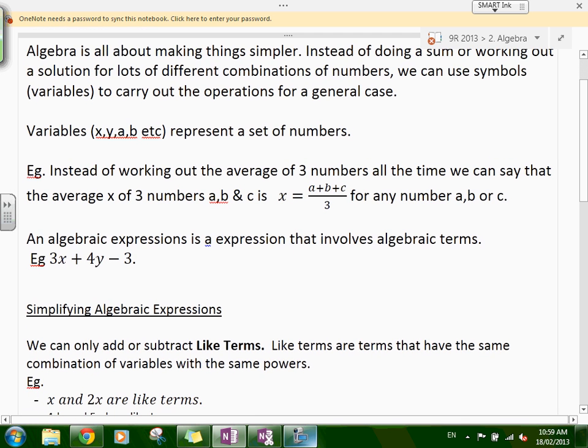Instead of working out the average of three numbers all the time, we can say that the average x of three numbers is for a, b, and c. x equals a plus b plus c over three for any number a, b, or c. For any set of numbers, we already know that this is how you work it out. You've been able to generalize, give a general rule of how it works.